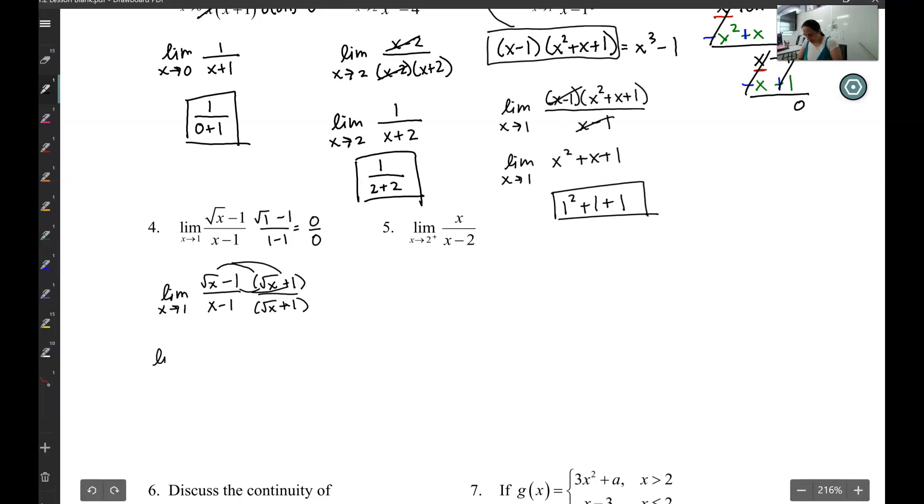So square root of x times square root of x is just x. Square root of x times positive 1 is a positive square root of x. Negative 1 times square root of x is a negative square root of x. A negative 1 times a positive 1 is a negative 1. So my middle terms are going to cancel out.